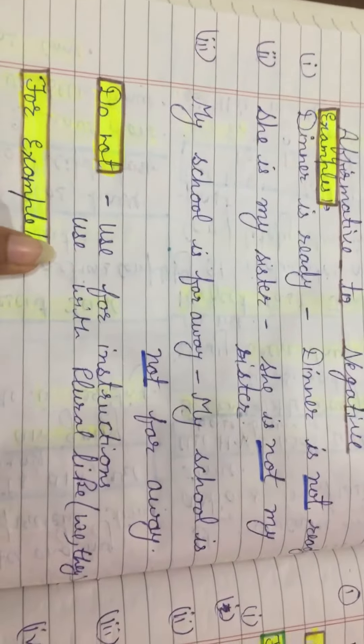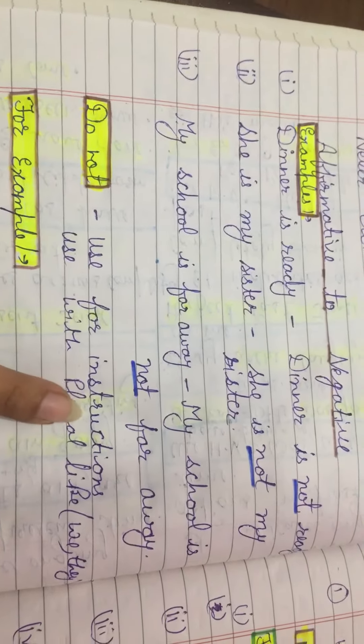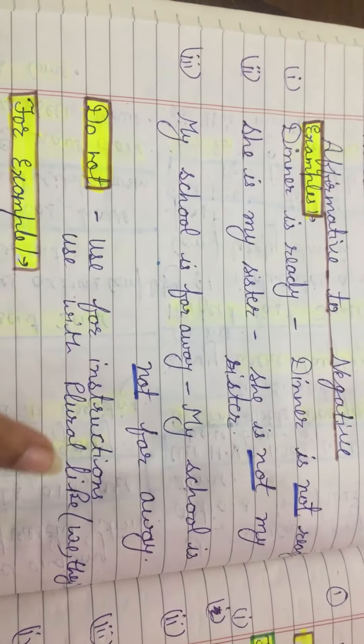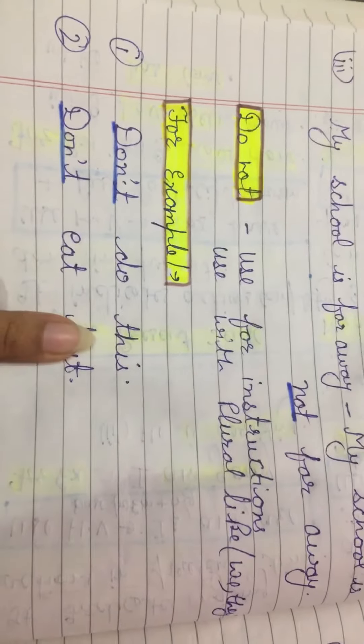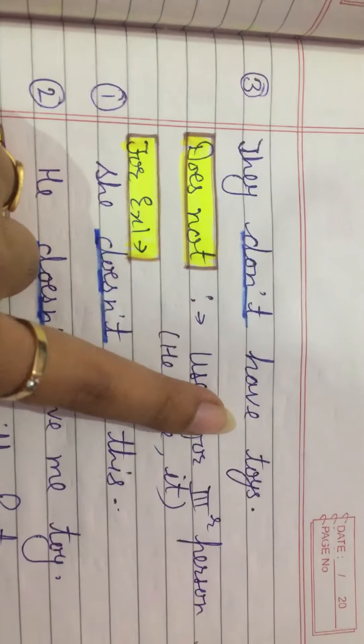Now, use of 'do not.' Use for instructions, and use with plural subjects like we, they. See some examples: Don't do this. Don't eat fast. They don't have toys.